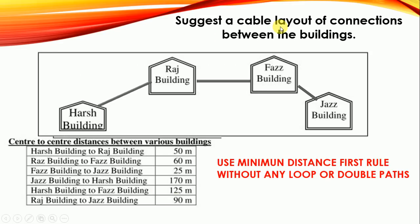The first question asks you to suggest a cable layout of connections between the buildings — basically, we have to draw a connection layout linking the buildings. To draw the connection, I use two rules: first, minimum distance first; and second, no loops or double paths. We have to create a single path to connect all buildings using minimum distance, saving wire.